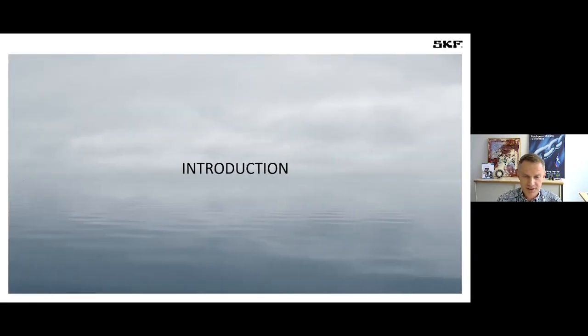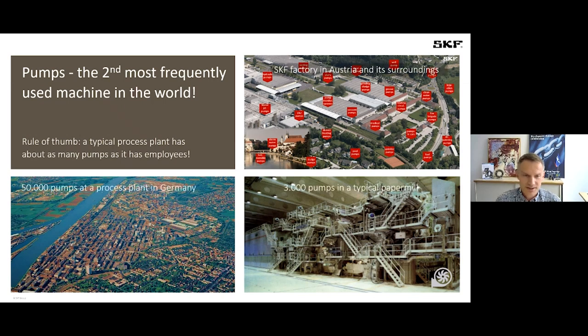Let's start with the introduction on what is driving the pump industry. Pumps are everywhere in the world, but it's still surprising to see some of the numbers on the screen. If you look on the left bottom image, 50,000 pumps in a larger process or chemical plant in Germany is quite amazing. There is a rule of thumb that you have typically as many pumps in such a plant as you have employees or even more. On the right side, 3,000 pumps in a typical paper mill.